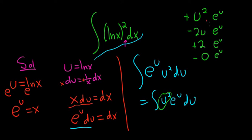Then you draw arrows. So arrow, arrow, arrow. And then you follow the arrows to get the answer. So it's u squared, e to the u, minus 2u e to the u, plus 2 e to the u, and then plus c.